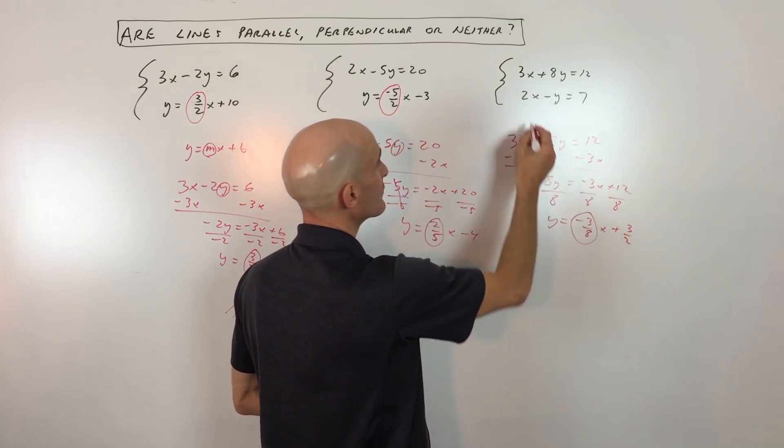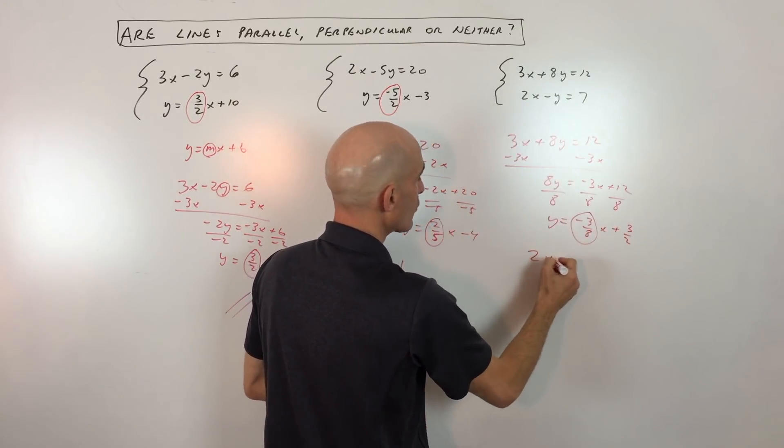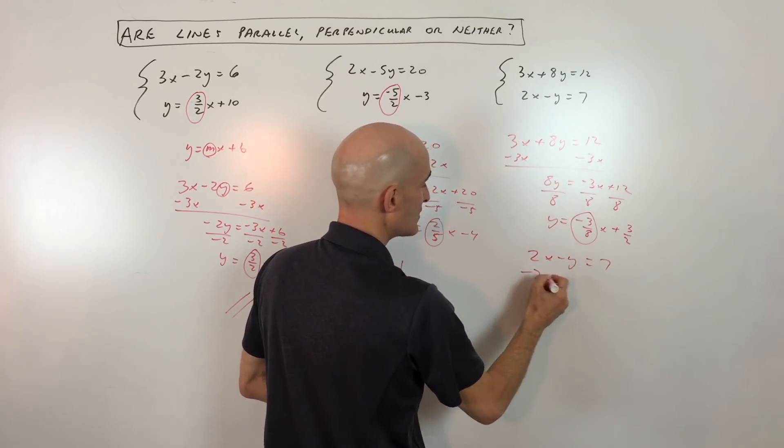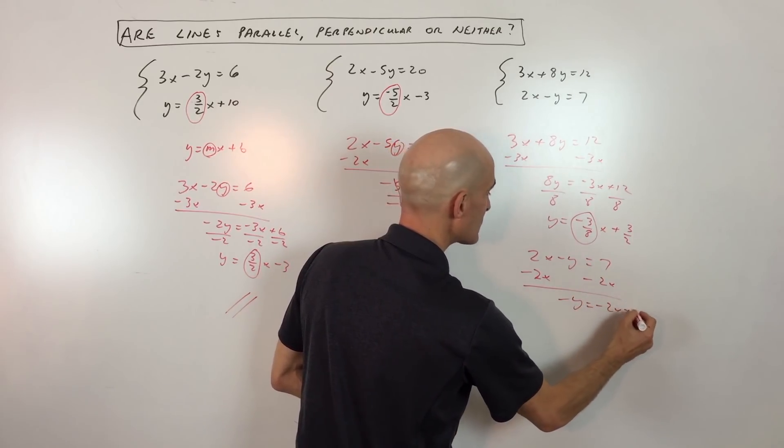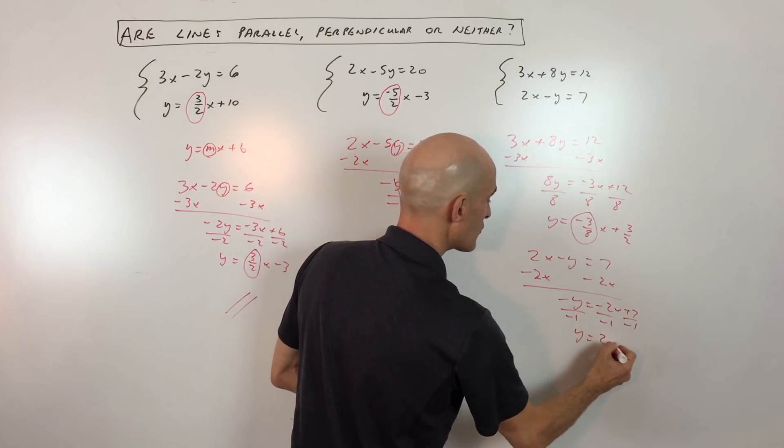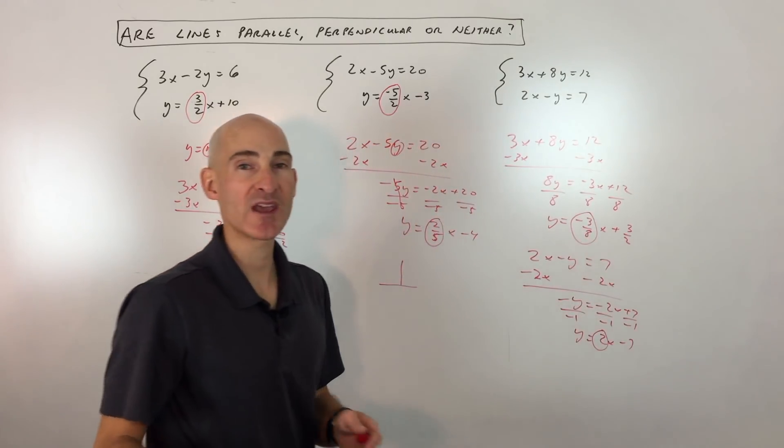For this one, we're going to get the y by itself by subtracting 2x from both sides of the equation. So we have negative y equals negative 2x plus 7, divide everything by negative 1. And you can see that y equals 2x minus 7. So here you have a slope of 2, here you have a slope of negative 3 eighths.